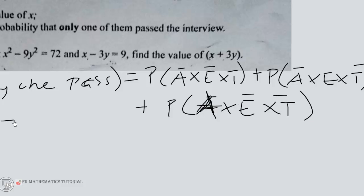So we fix in the values and simplify. So A failed is 1 over 2, E failed is 1 over 4. Then T passed is 1 over 3. Then A failed is 1 over 2, E passed is 3 over 4,